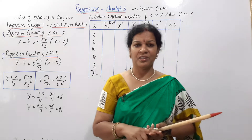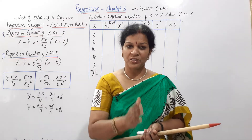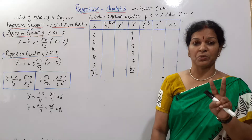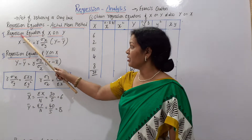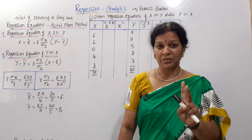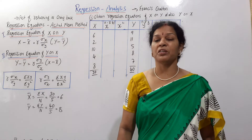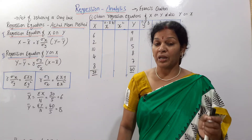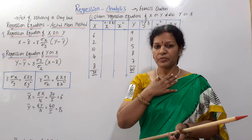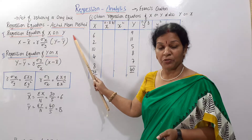Do you know correlation and standard deviation? The regression equations use these concepts. There are two methods: the actual mean method and the assumed mean method. I would prefer the actual mean method — follow the formula. Formulas using the actual mean method are easy to apply.